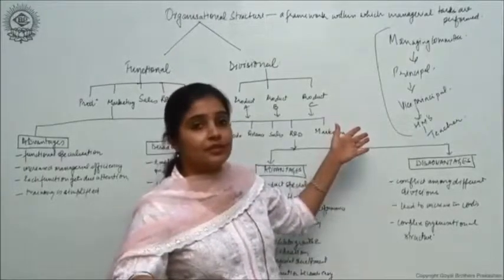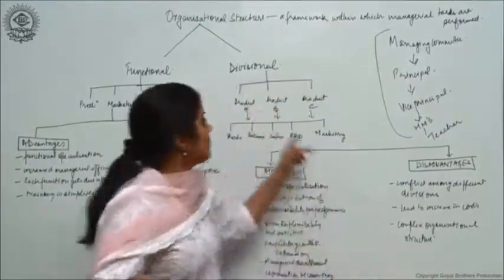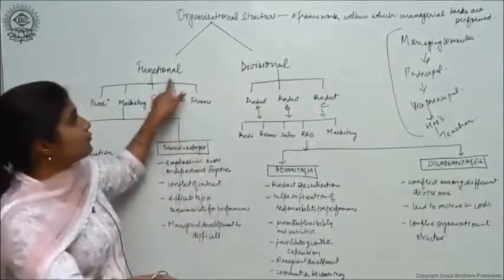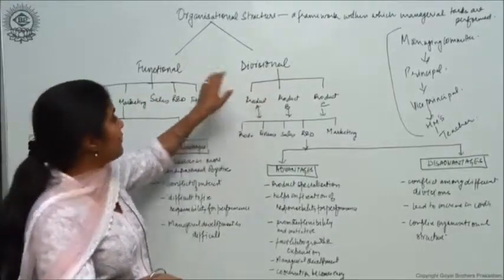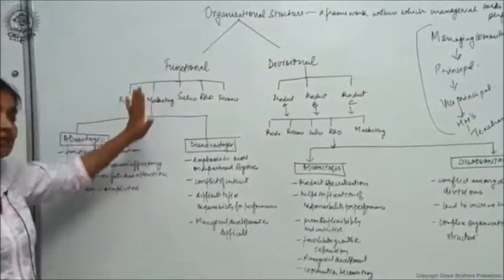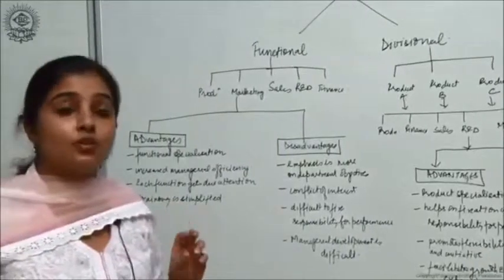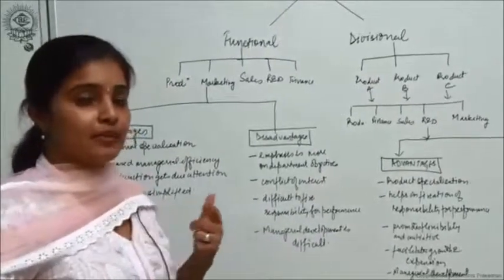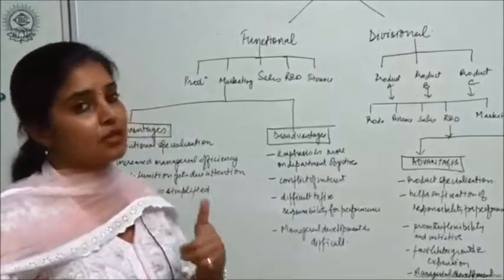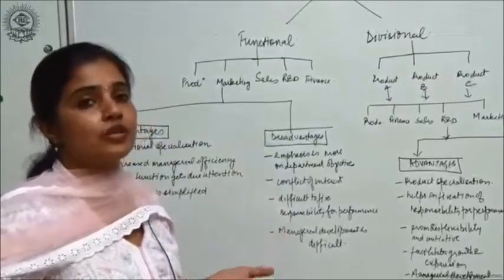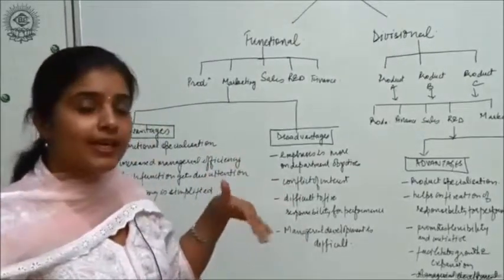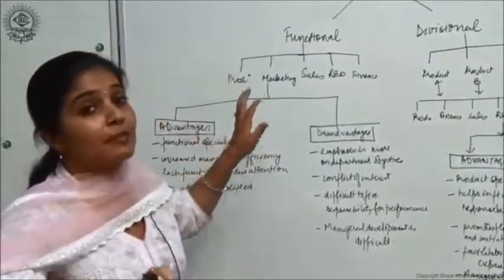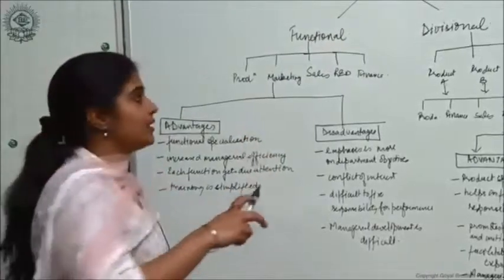There are two types of organizational structures we are going to discuss: functional structure and divisional structure. When we talk about functional structure, it means grouping the activities of similar nature — grouping activities belonging to a particular function such as production, sales, finance, research and development, and human resource management — and taking that particular function as a separate department.